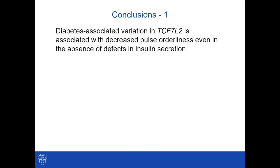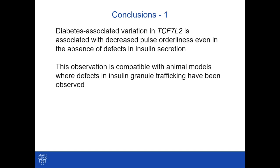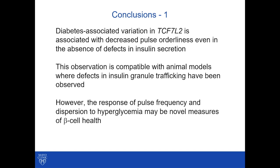We conclude that diabetes-associated variation in TCF7L2 is associated with decreased pulse orderliness, even in the absence of defects in insulin secretion. This observation is compatible with animal models where TCF7L2 is manipulated and results in defects in insulin granule trafficking. However, the response of pulse frequency and dispersion to hyperglycemia may be novel measures of beta-cell health, which require further study.